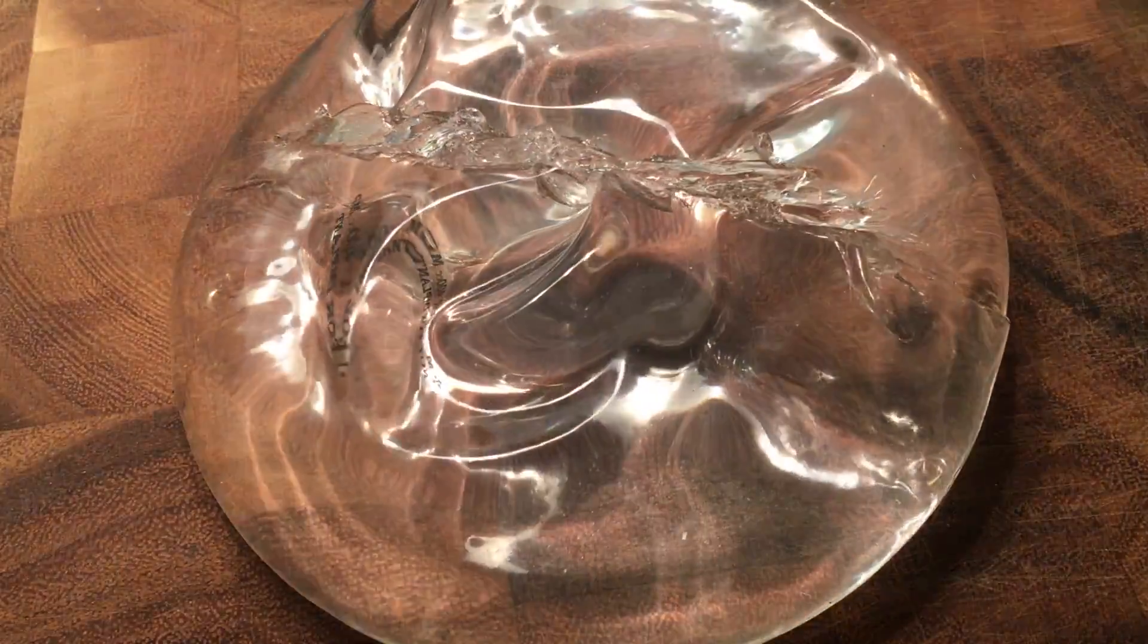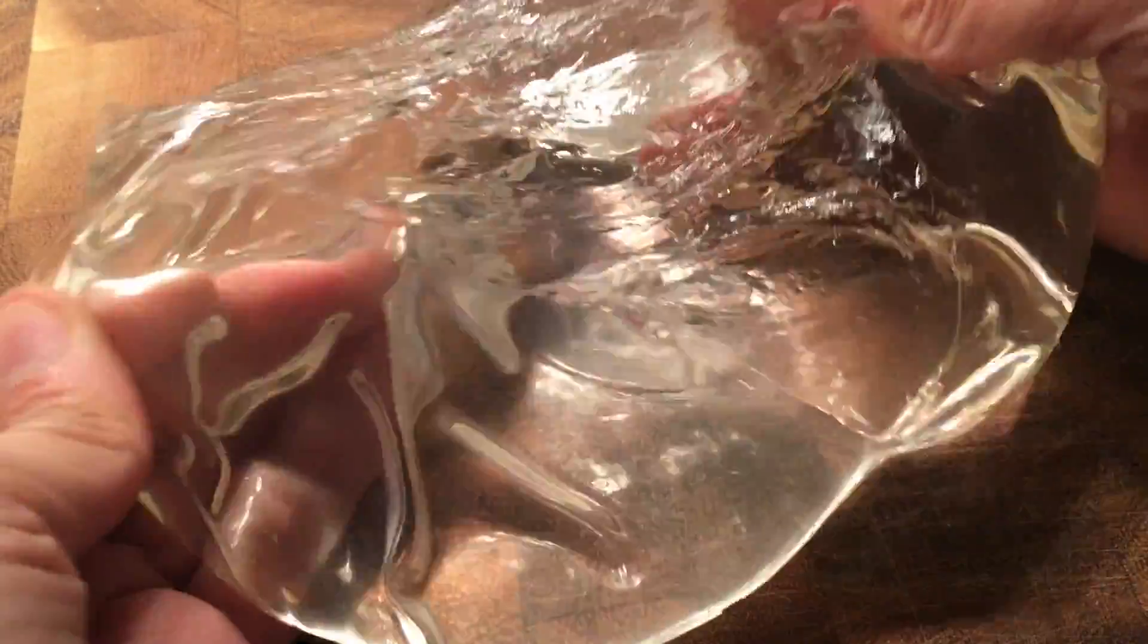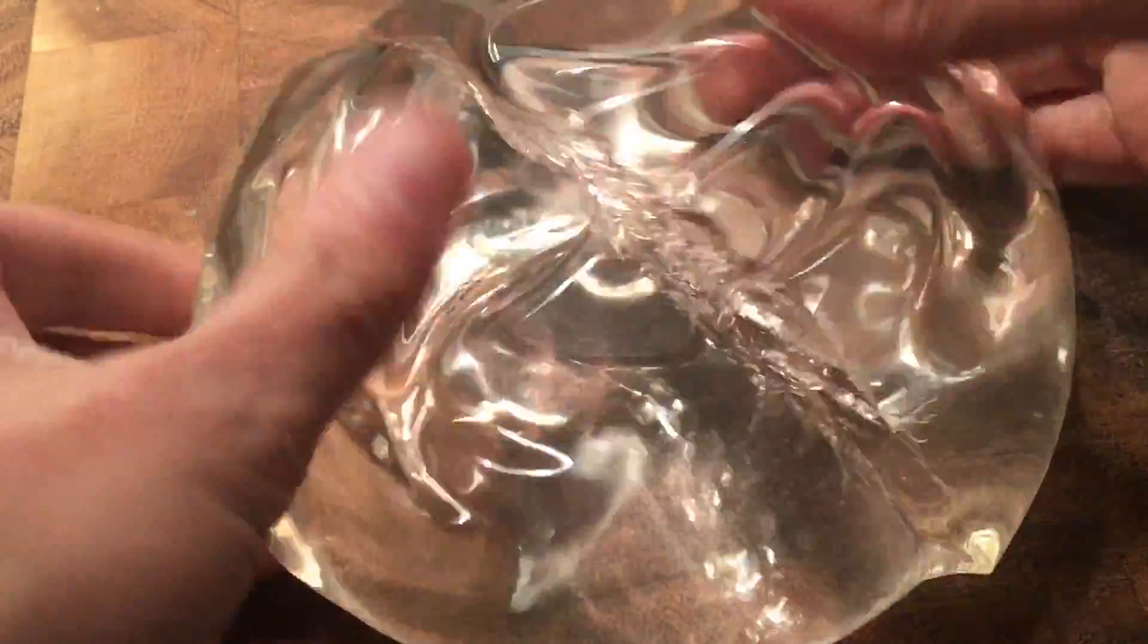Okay, so I've cut open this implant and you can see it doesn't spill out. It's fairly cohesive. It's gooey. It's like a really, really thick jelly. It's not as thick as a gummy bear but it doesn't ooze out all over the table.